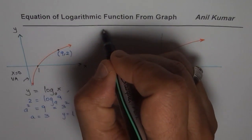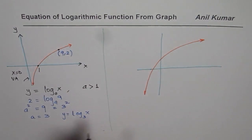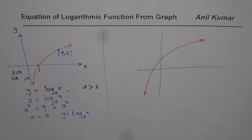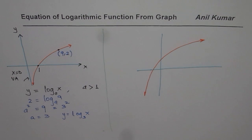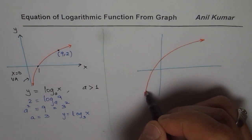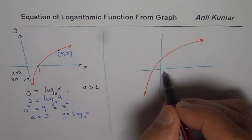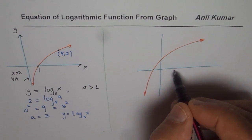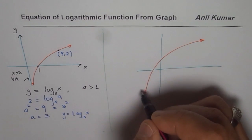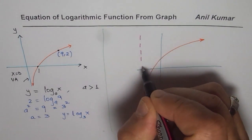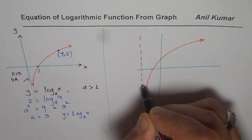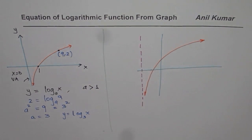So that is a very simple basic example, but it gives you an idea of how to find the equation of a logarithmic function from a given graph. Let's take another example. This time I am transforming the function — the x-intercept is not on the right side of the y-axis but on the left. It is still a logarithmic function, so it will always have a restricted domain and a vertical asymptote.